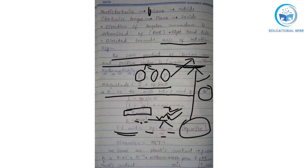Now let's find the dimension of angular momentum. Kilogram remains as M¹, meter squared becomes L², and seconds in the denominator gives T⁻¹.